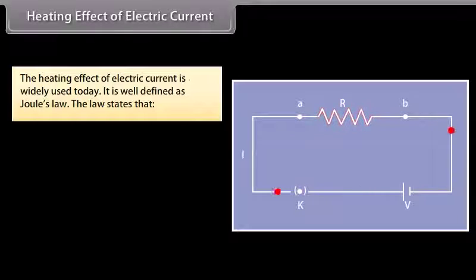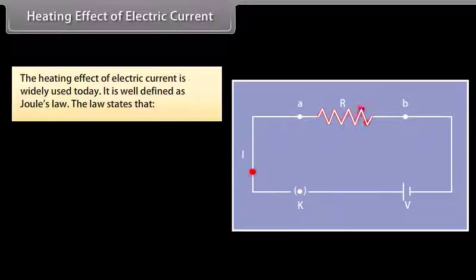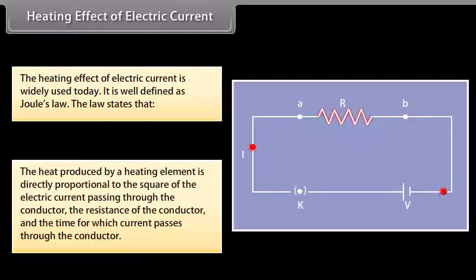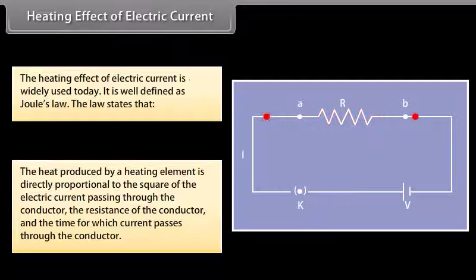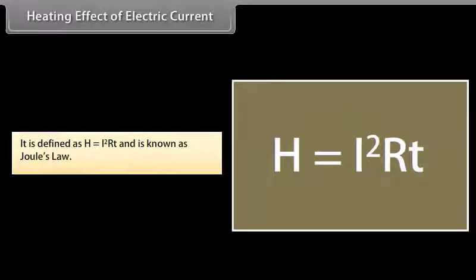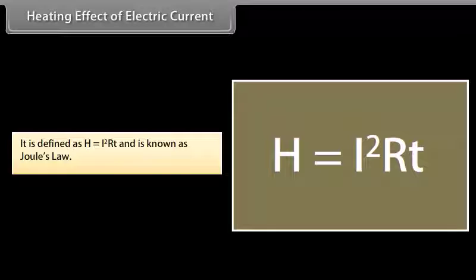The heating effect is caused when electric current is passed through a conductor, generating heat due to the resistance it offers to the current flow. The work done in overcoming this resistance produces heat. The heat produced is directly proportional to the square of the electric current, the resistance of the conductor, and the time for which current passes. This is expressed as H = I²RT and is known as Joule's law.